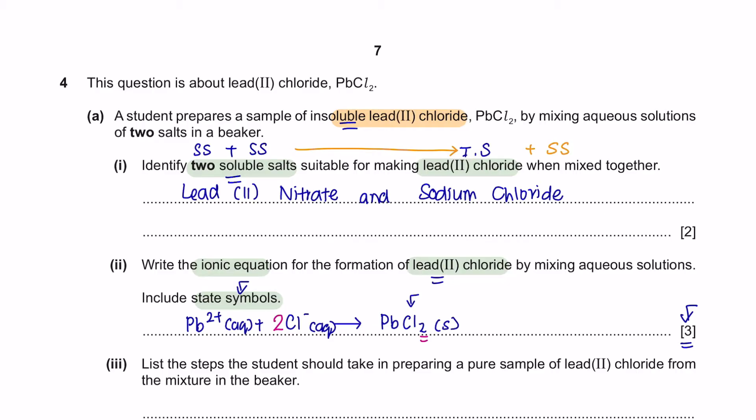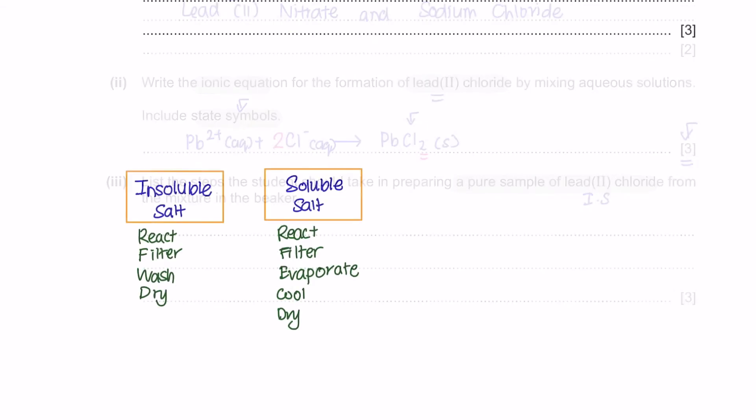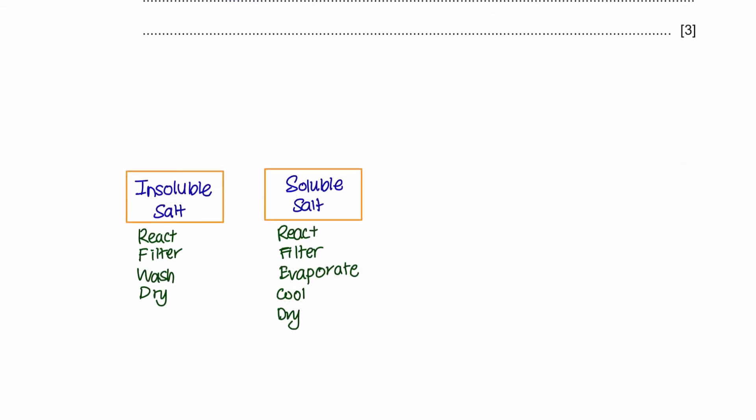Next, list the steps the student should take in preparing a pure sample of lead chloride from the mixture in the beaker. Lead chloride is an insoluble salt. I want you to take a screenshot of this. For soluble salts, these are the keywords you must have when explaining how to prepare it. And for insoluble salt, it's this: React, filter, wash, and dry.